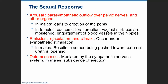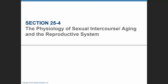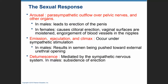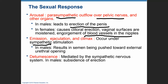We're going to close this chapter by going over the physiology of sexual intercourse and aging in the reproductive system. Similar to the male reproductive system, the first part of the sexual response in females is dictated by the parasympathetic nervous system, which causes an outflow over the pelvic nerves and other organs. It will lead to erection of the clitoris in females, vaginal secretion, and engorgement of the nipples' blood vessels. The next event is dictated by the sympathetic nervous system, including ejaculation in males; afterwards, detumescence is mediated again by the sympathetic nervous system in males.